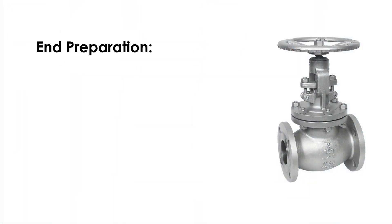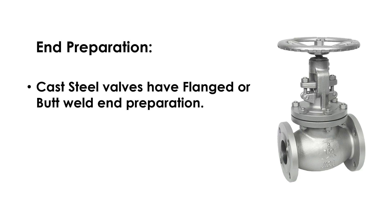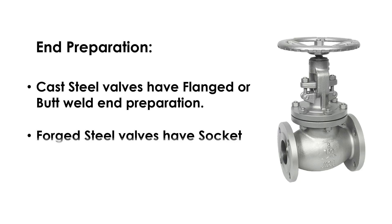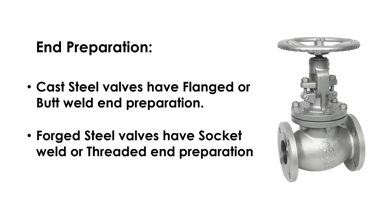In preparation for globe valves: cast steel valves have flanged or butt-weld end preparations; forged steel valves have socket-weld, threaded, and similar end preparations.